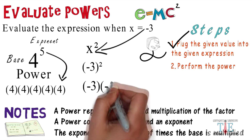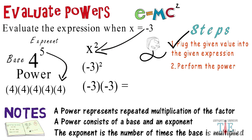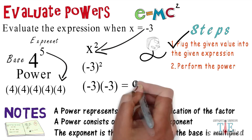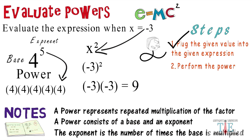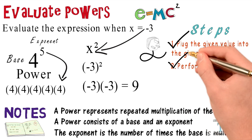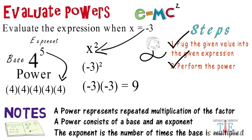Negative 3 squared means negative 3 times negative 3, and negative 3 times negative 3 equals 9. Check off step two and we're done.